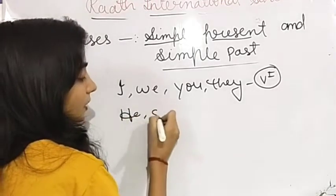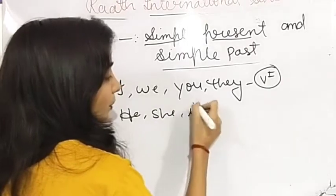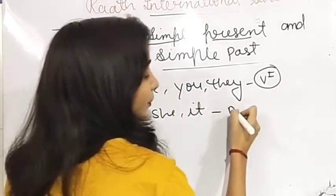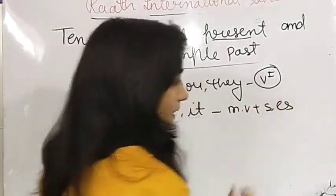When the subject is I, we, you, or they, we use the main verb first form only. When the subject is he, she, or it (singular), we use main verb plus S or ES.